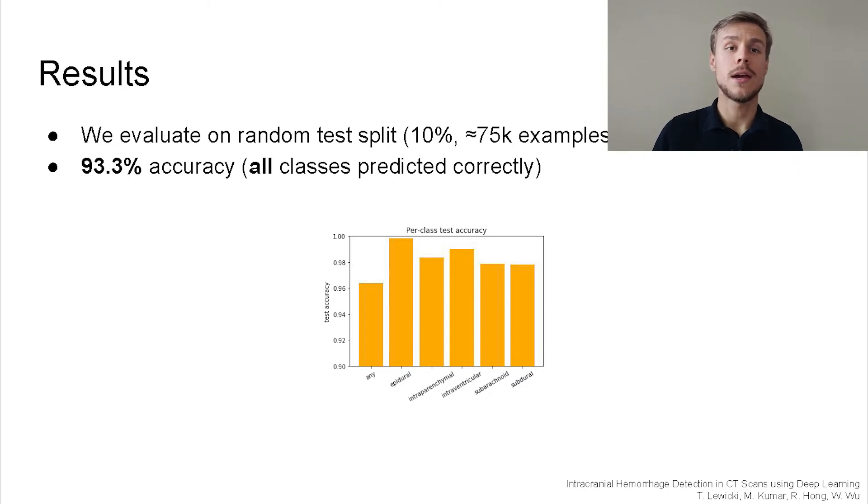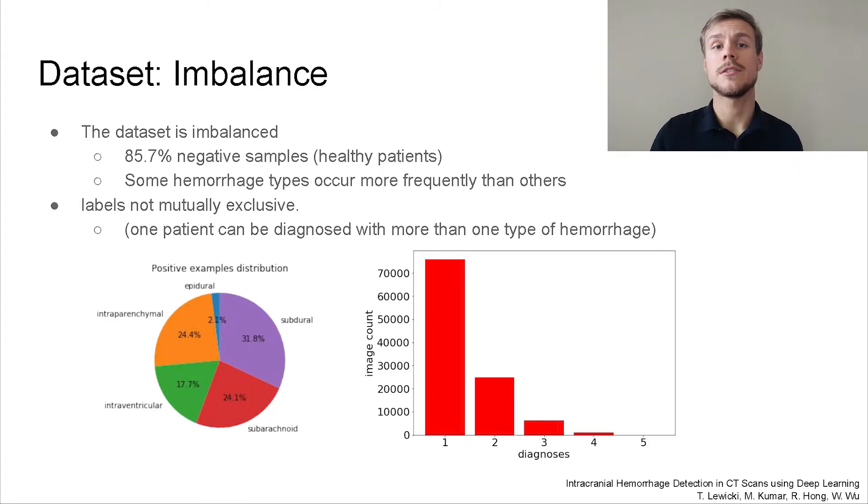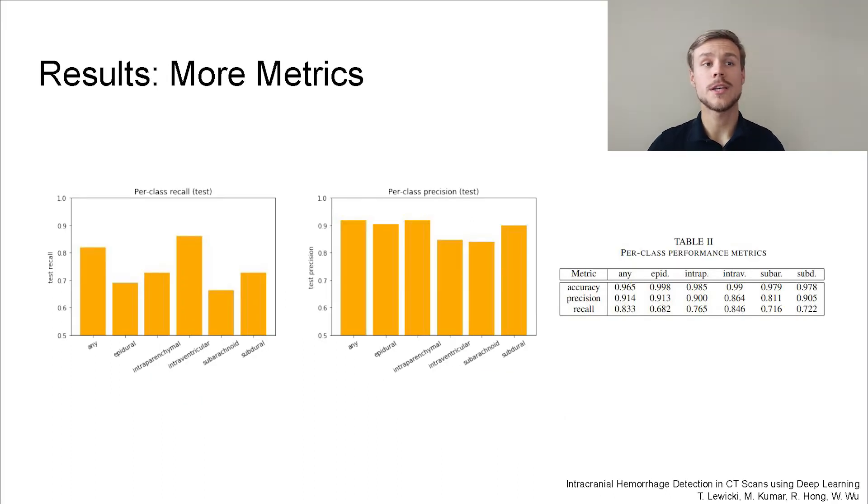However, as you might remember from an earlier slide, the dataset is imbalanced, so accuracy might be a flawed measure of success. This is why we keep track of precision and recall as additional metrics for our model. We consider recall score to be the most important measure of performance, as it corresponds to the number of sick patients that receive a correct diagnosis.